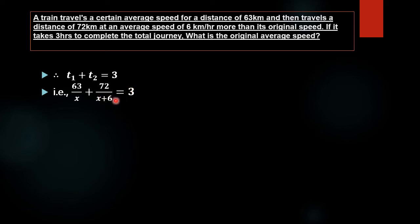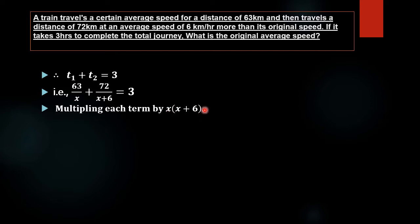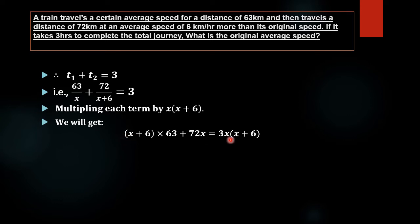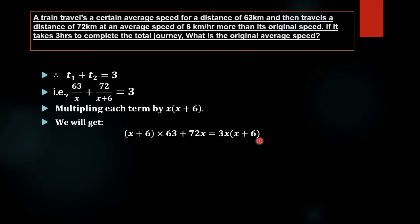For simplifying the equation, we will multiply each term by x times (x plus 6). Multiplying the first term 63 over x by x(x+6), the x cancels and gives 63(x plus 6). Multiplying the second term 72 over (x plus 6) by x(x+6), the (x plus 6) cancels and gives 72x. The right side becomes 3x(x plus 6).